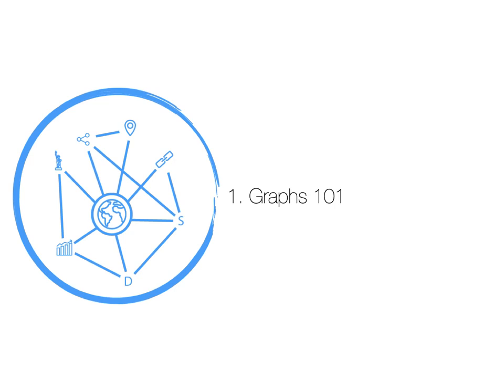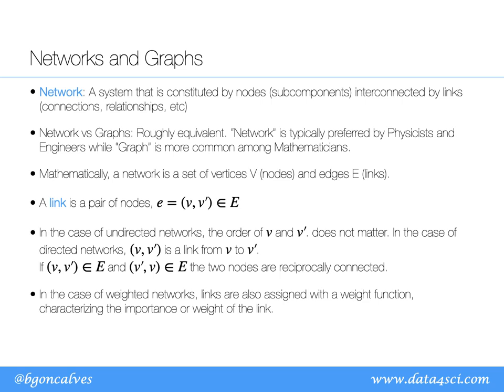First question: what exactly is a graph, and why do I sometimes say graphs and sometimes say networks? A network is essentially a system constituted by nodes — subcomponents of our system — interconnected by links. These links can correspond to any type of connection, relationship, or interaction. In physics we tend to use the word network, while mathematicians and computer scientists tend to use the word graph. I use them interchangeably, though some say networks are a subset of graphs. For our purposes, you can think of graphs and networks as the same thing.